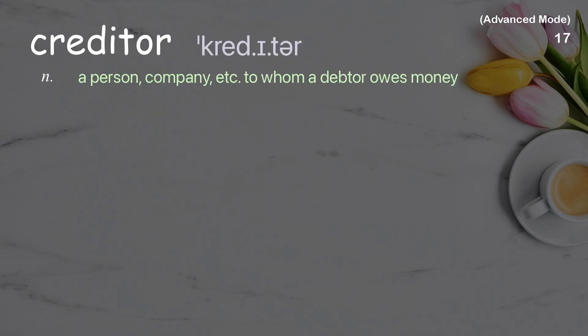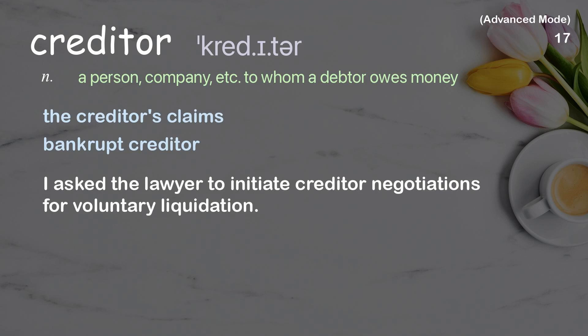Creditor: a person, company, etc. to whom a debtor owes money. Examples: the creditor's claims, bankrupt creditor. I asked the lawyer to initiate creditor negotiations for voluntary liquidation.